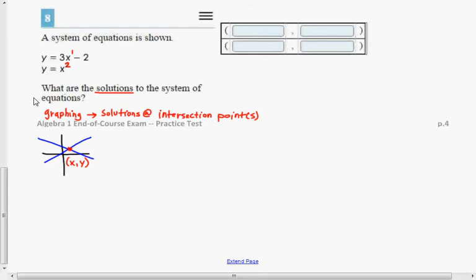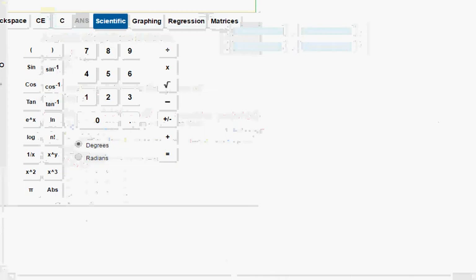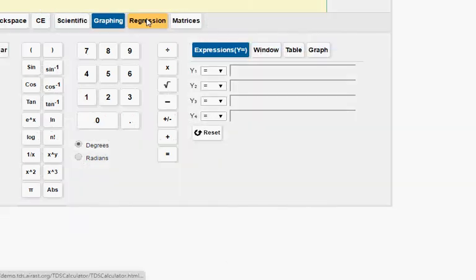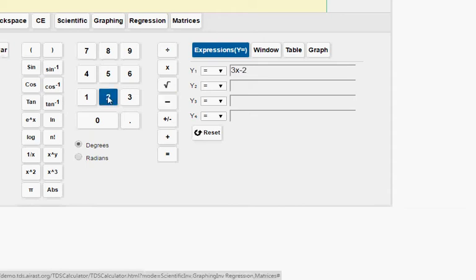So if we want to find the solution to this system, using technology, which you have access to, graph these two equations and see where they intersect. So, y equals 3x minus 2 and y equals x squared. Let's go graph these. So, go to the graphing, and we want y equals 3x minus 2 and y equals x squared.